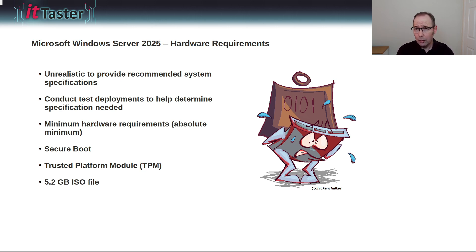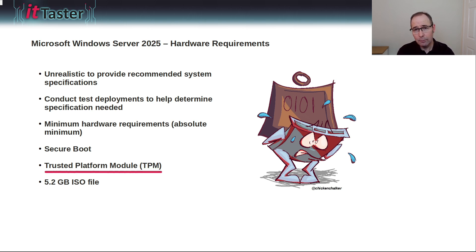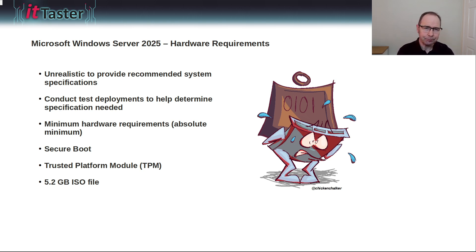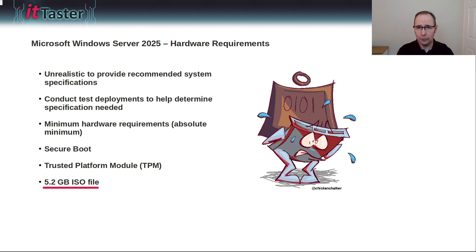There are some important system requirements we do need to be aware of with Windows Server 2025. Firstly, you'll need to make sure that the computer supports secure boot. Also, a Trusted Platform Module — a TPM chip — is needed. If you don't have these, there is a workaround but that's really only suitable for the test lab. Finally, the Windows Server 2025 ISO file is a little over 5GB in size, so if you plan to install from physical media you'll need to configure a bootable USB memory stick. If you need more help with that, please leave a comment below.